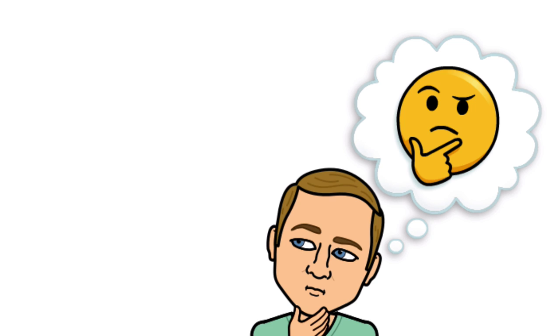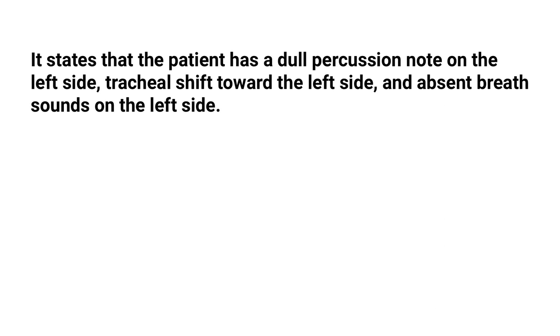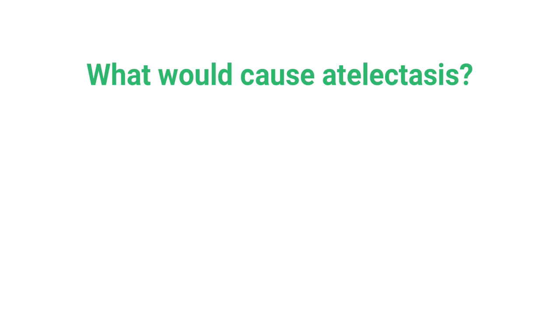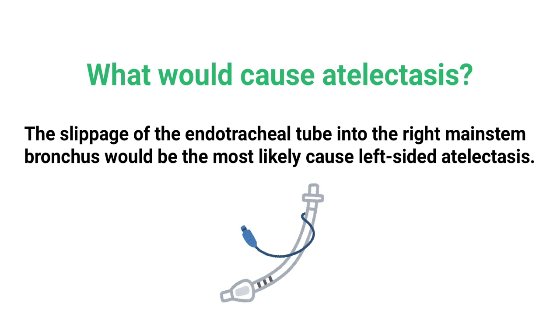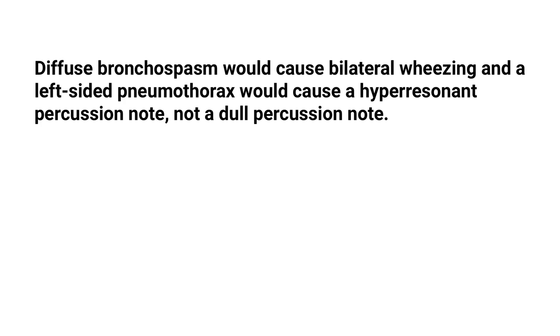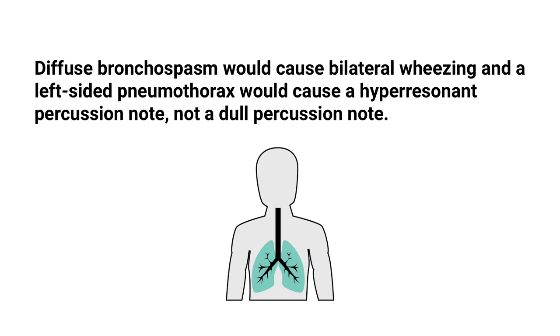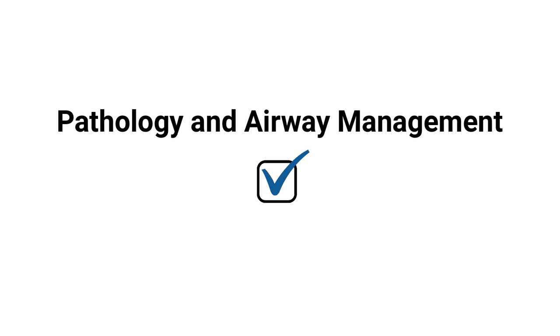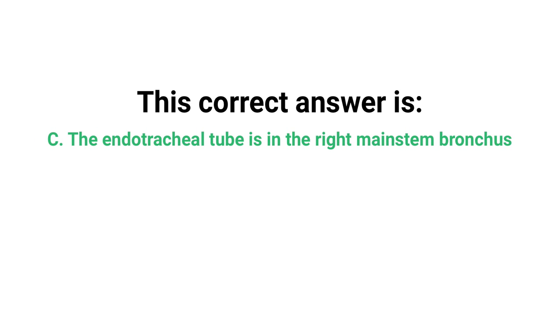We can determine the correct answer right away from the information in the question. The patient has a dull percussion note on the left side, a tracheal shift towards the left, and absent breath sounds on the left — all signs of atelectasis. The slippage of the endotracheal tube into the right mainstem bronchus would be the most likely cause of left-sided atelectasis. Diffuse bronchospasm would cause bilateral wheezing, and a left-sided pneumothorax would cause a hyper-resonant percussion note, not a dull one.